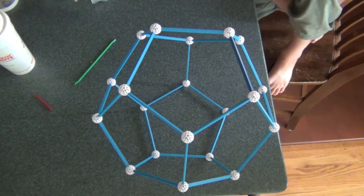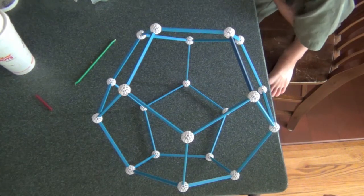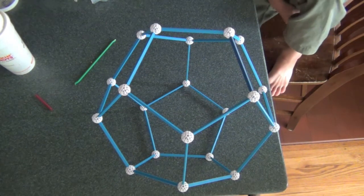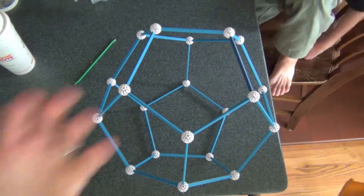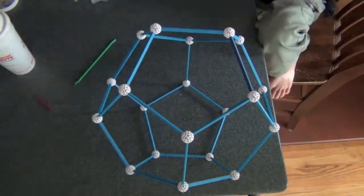How about that? There's sixty symmetries of a dodecahedron. Wow. And we found all of them. High five guys. That was a lot of work. Good job.